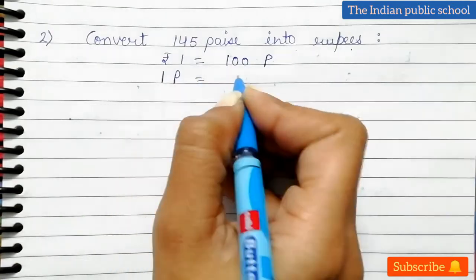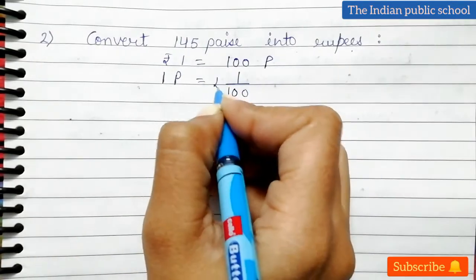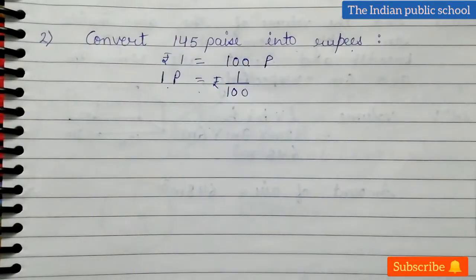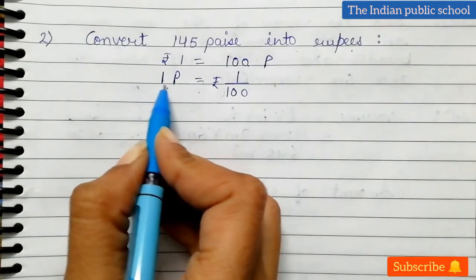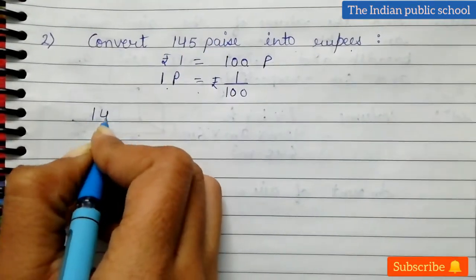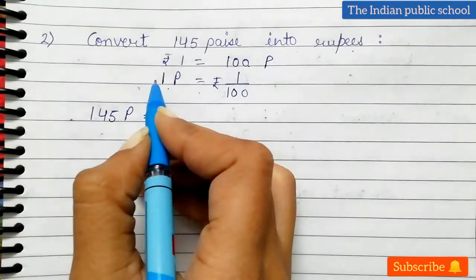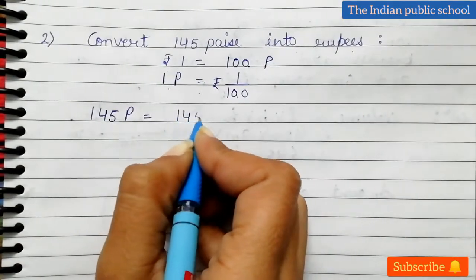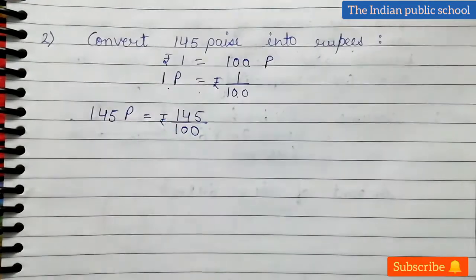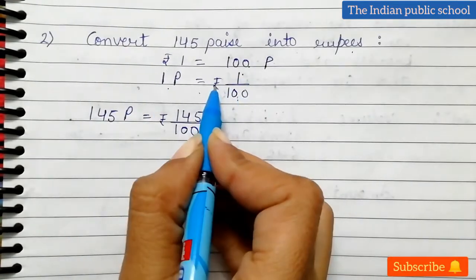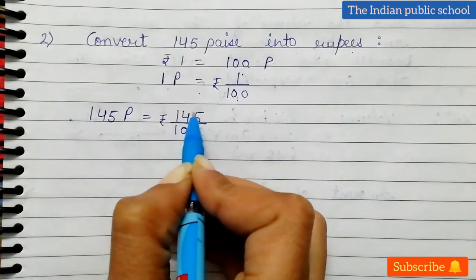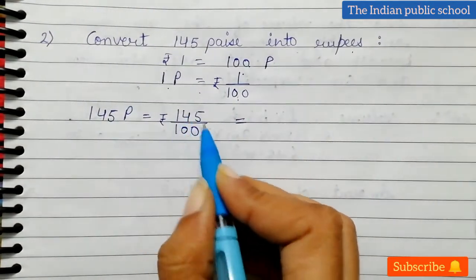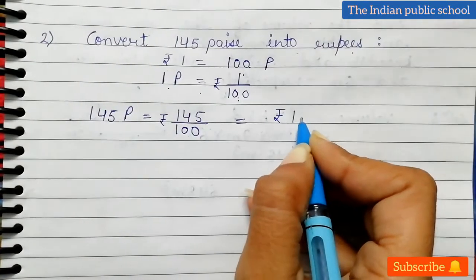And 1 paisa is equal to 1 by 100 rupees. In 1 rupee there are 100 paisa, and in 1 paisa there is 1/100 rupees. Now we have 145 paisa in place of 1 paisa. If 1 paisa is equal to 1/100 rupees, then 145 paisa will be equal to 145 by 100 rupees. When you divide, the answer is rupees 1.45.